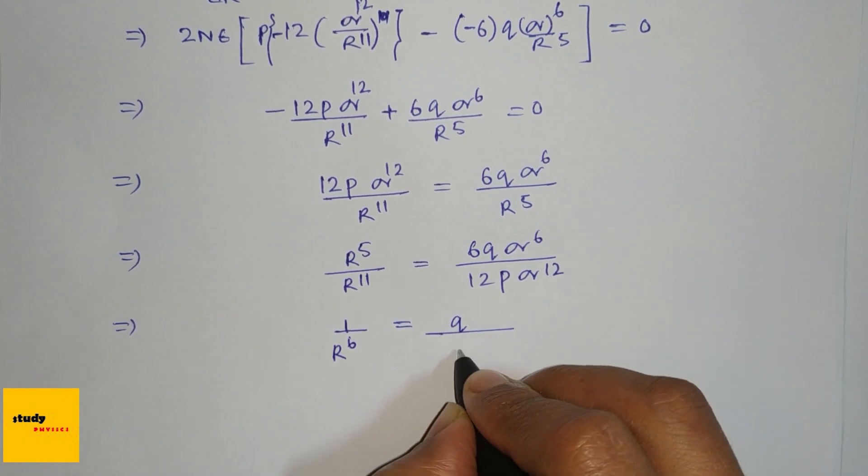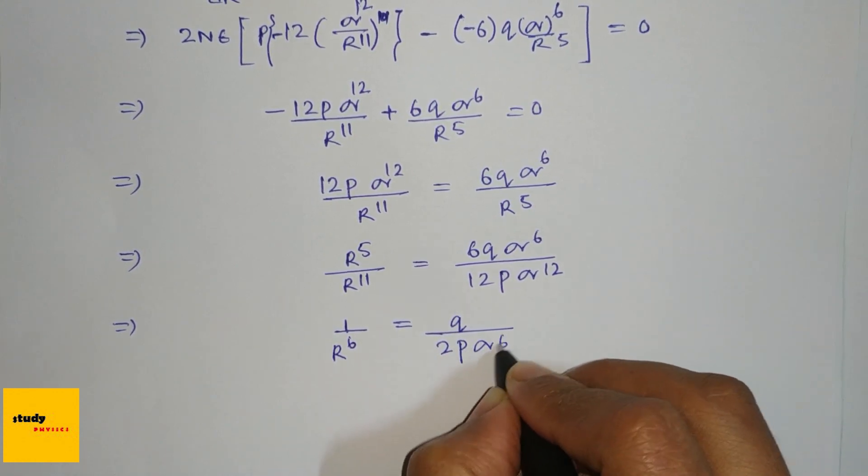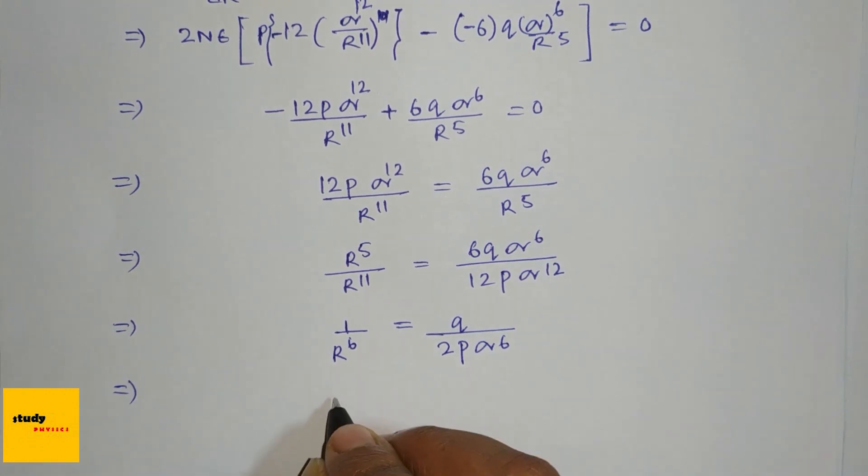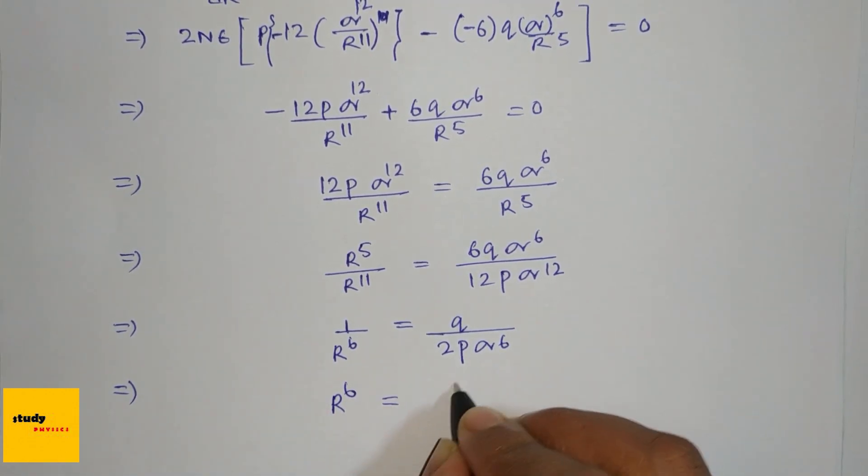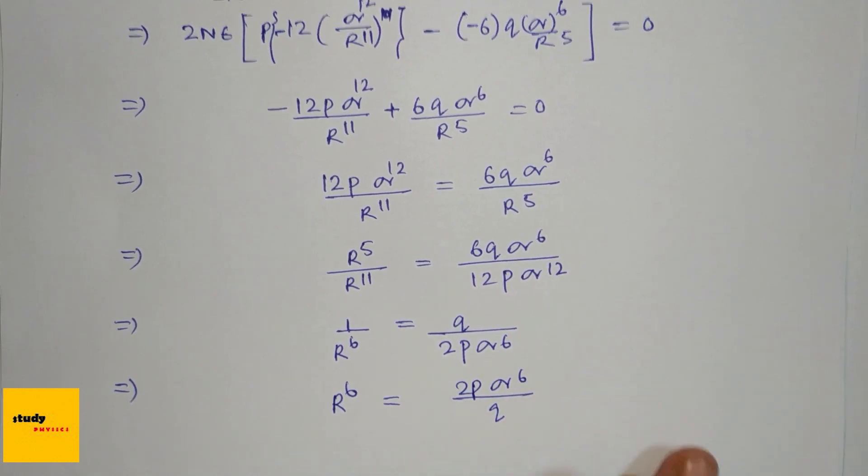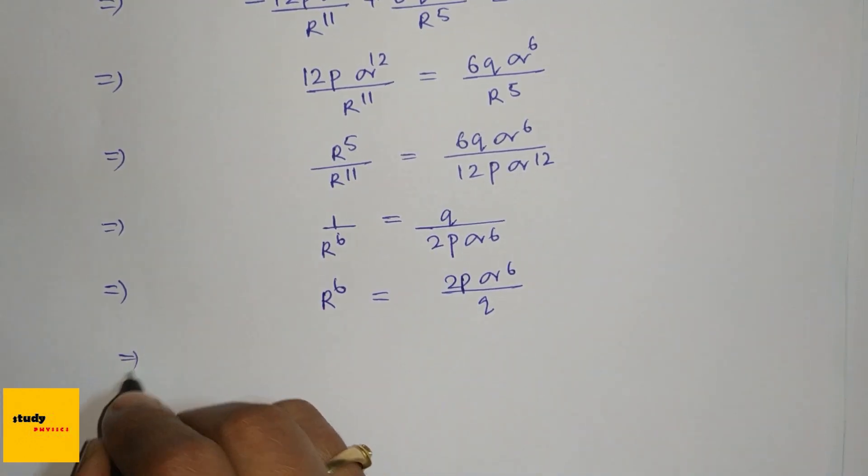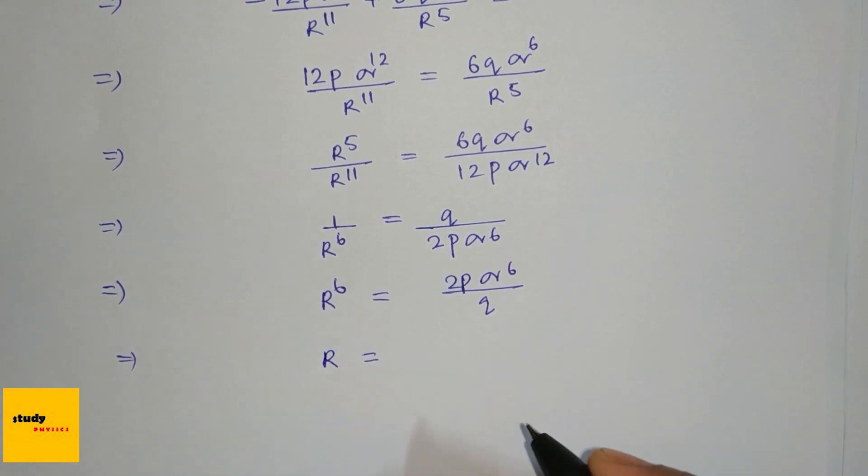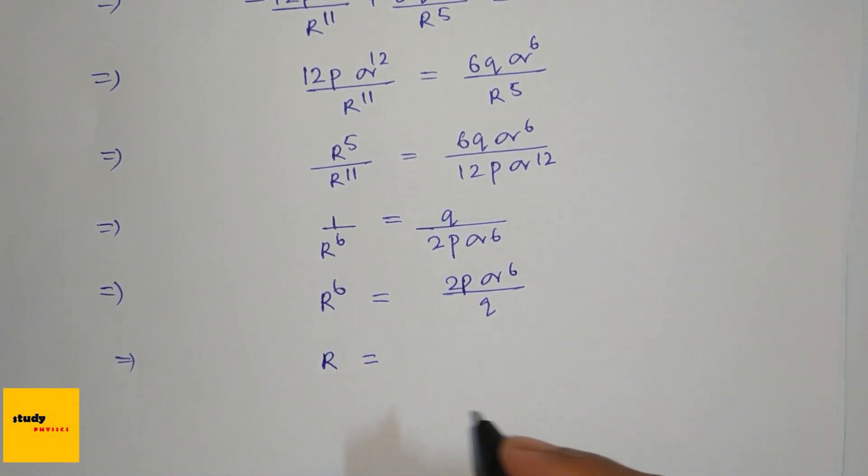We can write R^6 equals (2p(σ^6))/q. Therefore R, which is our nearest neighbor distance between two atoms, equals...